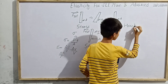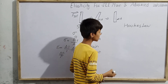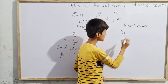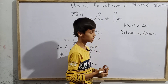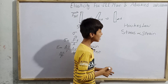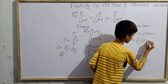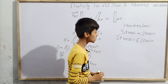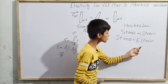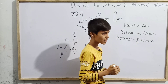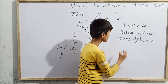We will now understand Hooke's law. According to Hooke's law, stress is directly proportional to strain — meaning stress and strain are directly proportional to each other. If we form a formula, stress equals E times strain. This equation is known as Hooke's law. Here, E is known as the modulus of elasticity.